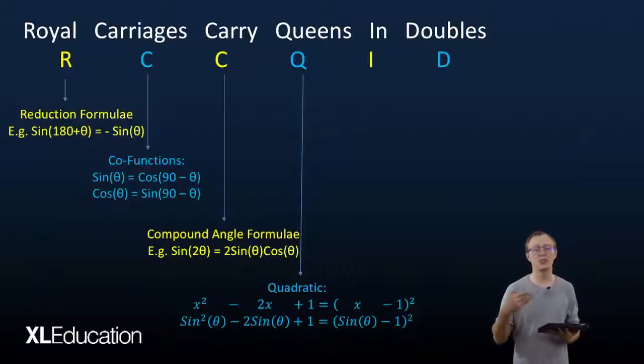So if it's easier for you to see that you have a quadratic, you can substitute in x for sin(θ) or cos(θ) to find something in the form x² - 2x + 1 that's easier for you to work with.